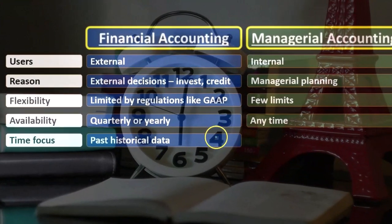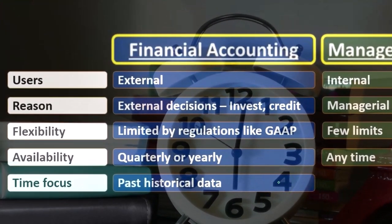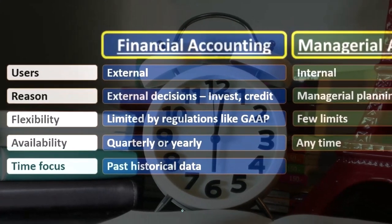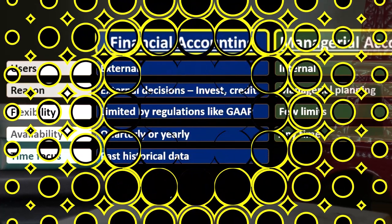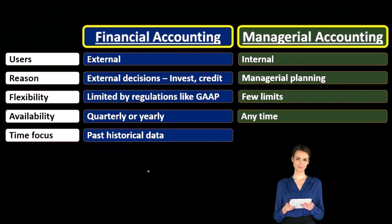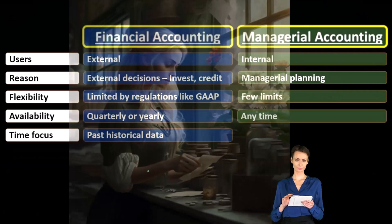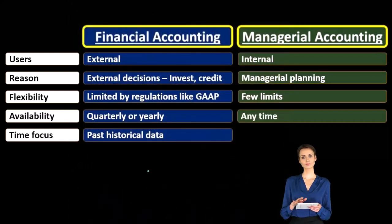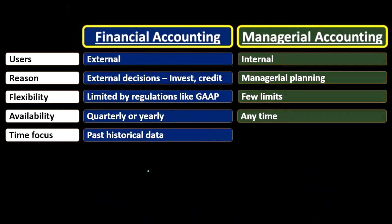The time focus for financial accounting is typically going to be the past — we're looking at historical data. Investors are going to be looking to project into the future as well, but all the financial statement preparation is geared towards what happened in the past from our side — from a company standpoint. We're trying to say what happened and put it together as accurately as possible, and then investors could make future projections based on that.